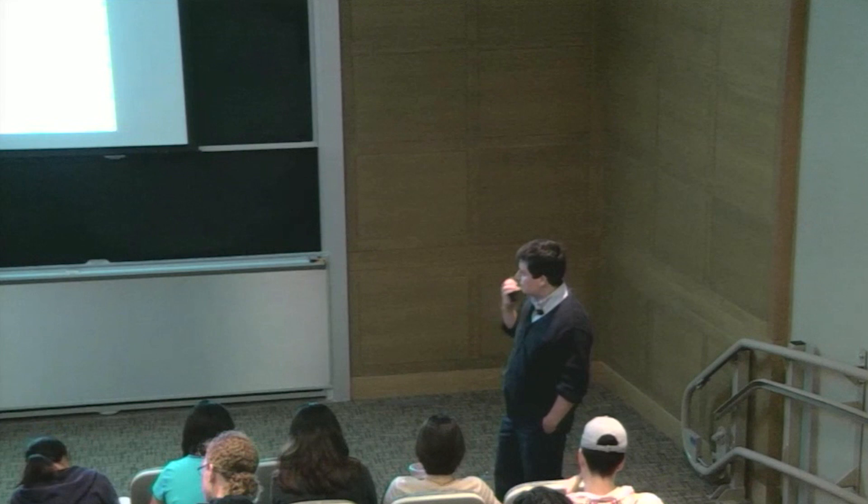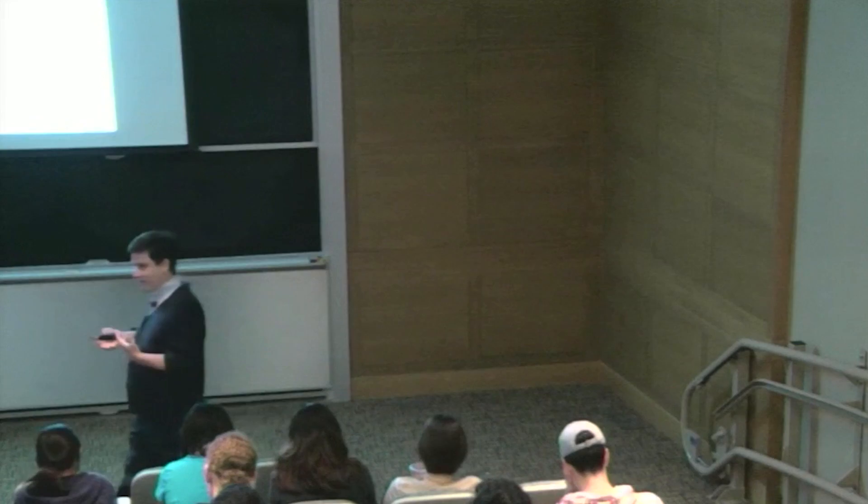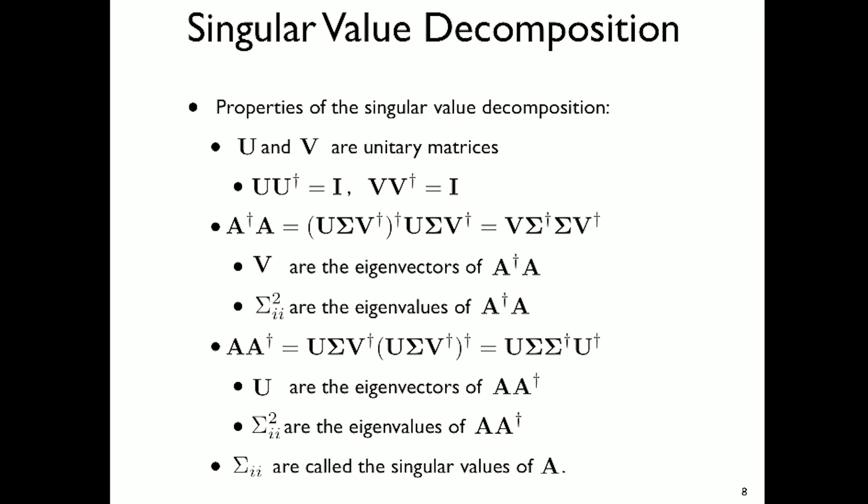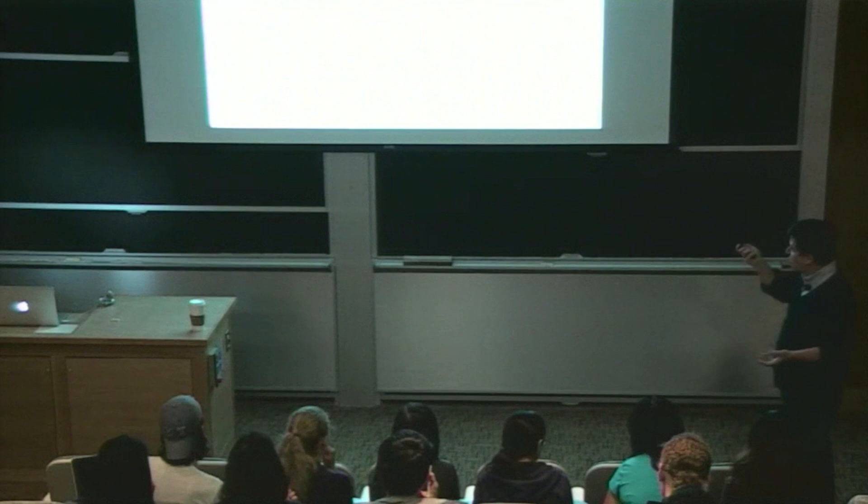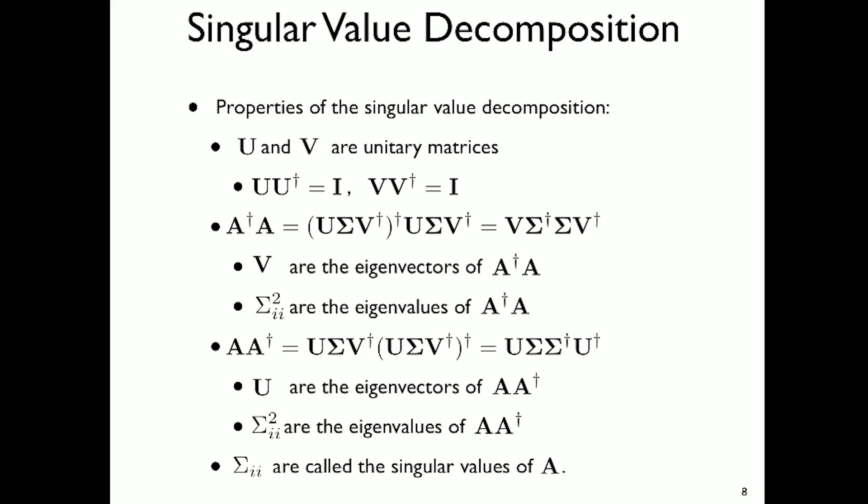Similarly, A·A† gives U·Σ·Σ†·U†, so U are the eigenvectors of A·A†, and Σ² are still the eigenvalues. U and V relate to the eigenvectors of the product of A with itself. Sigma contains the singular values — all matrices possess this decomposition. These sigmas are called the singular values of A. I'll now show you how this decomposition can be used to do something you already know, but done formally.